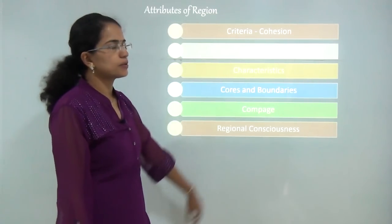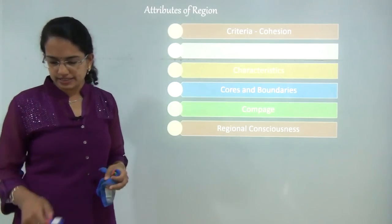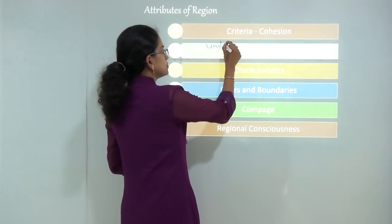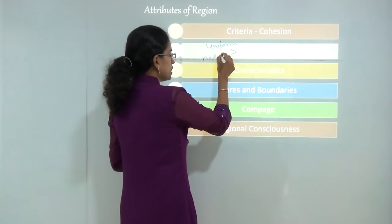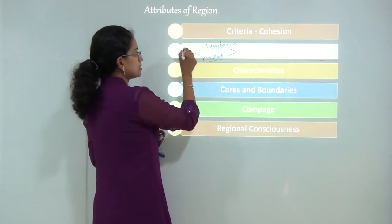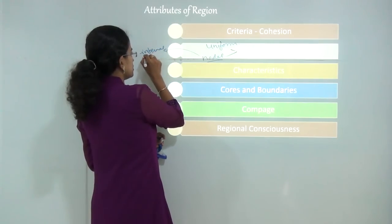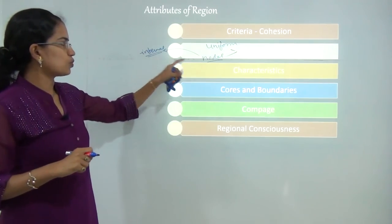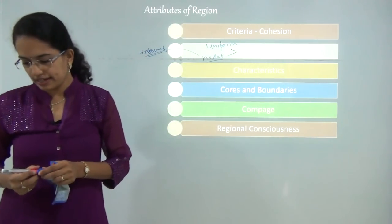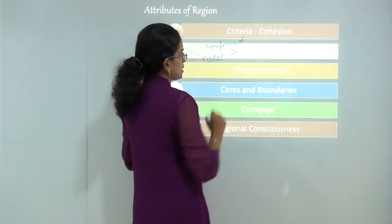The next attribute is categories. Under categories, I can define a region as either uniform or nodal. When I say it is a nodal category, that means what is primarily important is the internal structure of the region. Any internal structure of the region would be a primary requirement for a nodal category. While in the case of a uniform category, it has a kind of formal distribution of the criteria we have been talking about.